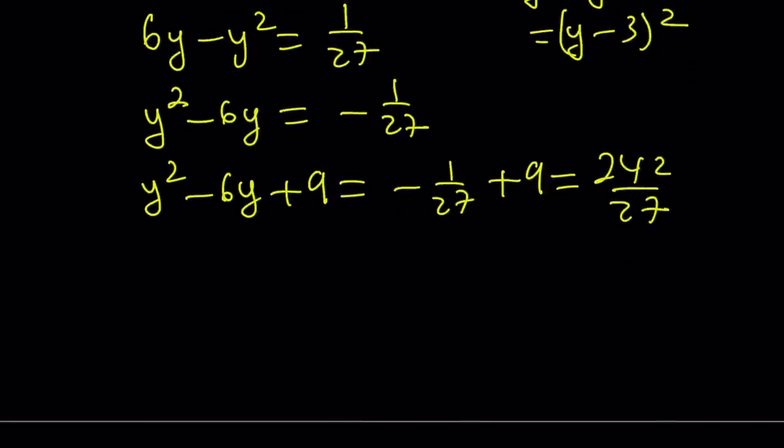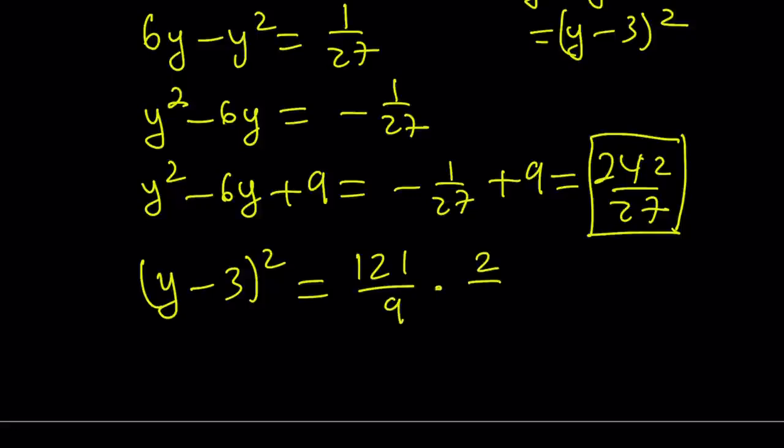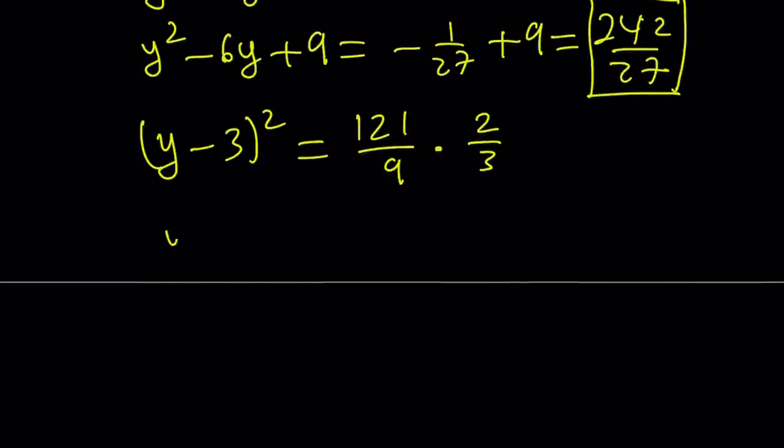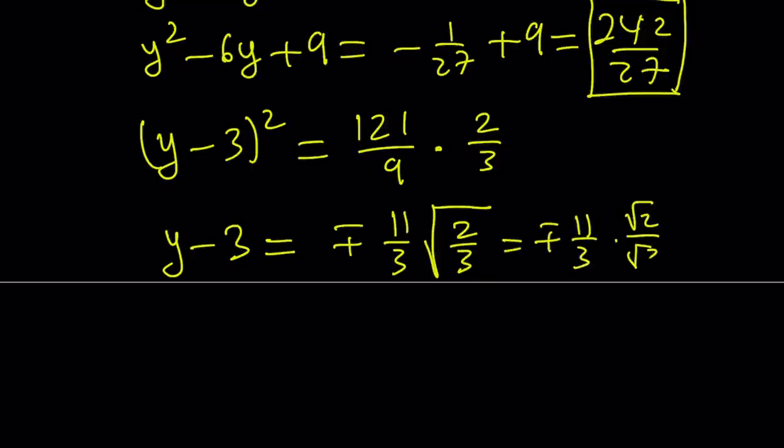Now, the left-hand side, remember, is a perfect square, so I can write it as y minus 3 quantity squared. And, the right-hand side, this number, I'm going to write it as a product of two fractions, one of which is a perfect square. So, how about 121 over 9 multiplied by 2 thirds. So, 121 over 9 is 11 third squared, which is nice because now I can square root both sides, and I get plus minus 11 over 3, and then multiplied by the square root of 2 thirds. But, the square root of 2 thirds can be written as root 2 over root 3, and then, obviously, I do want to rationalize the denominators and write it nicely.